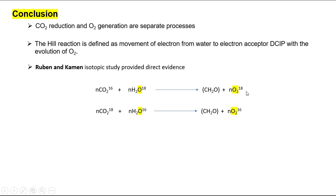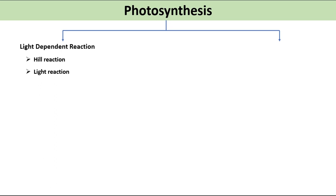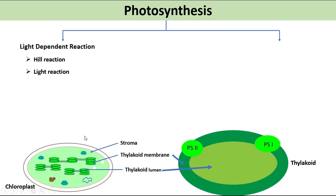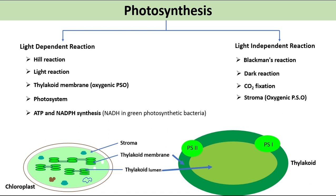Photosynthesis occurs in two steps. The first is the light-dependent reaction, also known as the Hill reaction, because Hill first reported that O2 evolution and CO2 fixation are separate processes. Since light is required, it involves photosystems, and ATP and NADPH synthesis occur in this process. The second is the light-independent reaction, also known as Blackman's reaction or the dark reaction, in which CO2 fixation occurs in the stroma and carbohydrates are synthesized.